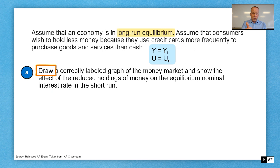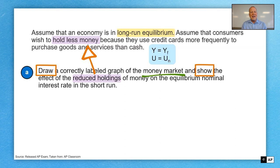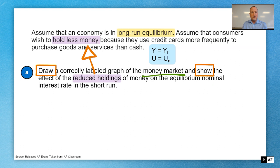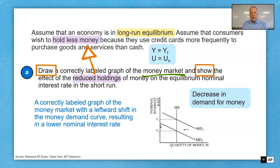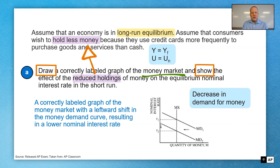In this question, they're asking you first to draw the money market, then to show the effect of the reduced holdings of money — that connects back to the prompt where they said hold less money. Make those connections between the prompt and the question. We've got to show what happened to nominal interest rates as a result of the reduced holdings of money. This is going to look like a decrease in demand for money — money supply and money demand. The correct response should have a correctly labeled graph of the money market with a leftward shift in the money demand curve, resulting in a lower nominal interest rate.